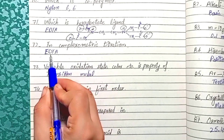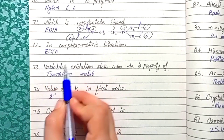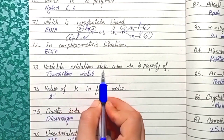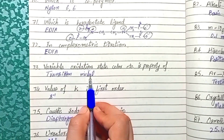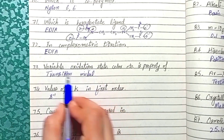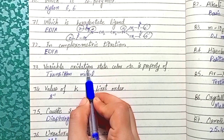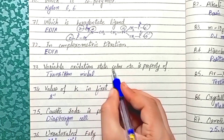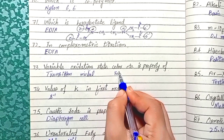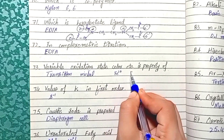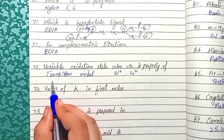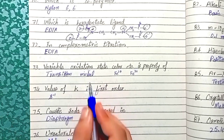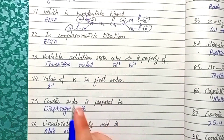Question 73: Variable oxidation state, color, etc. are properties of transition metals. Transition metals have variable oxidation states — for example, iron can have an oxidation state of +2 or +3. This property of variable oxidation state is found only in transition metals.